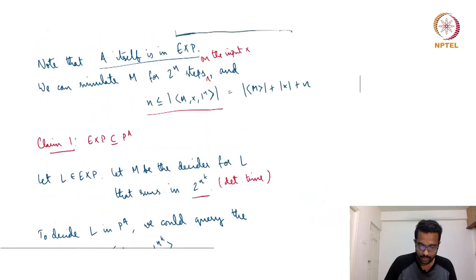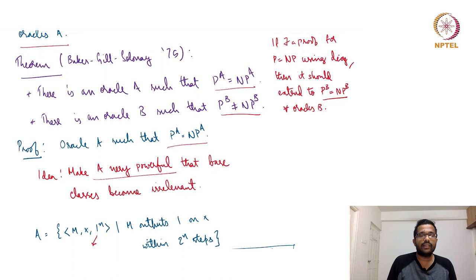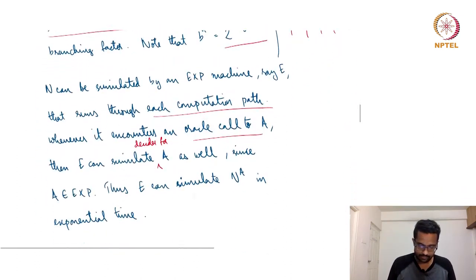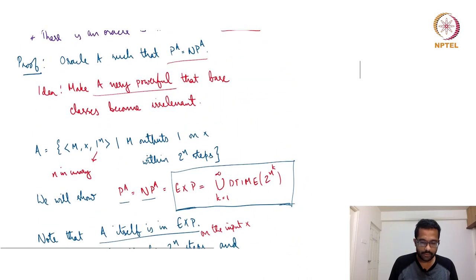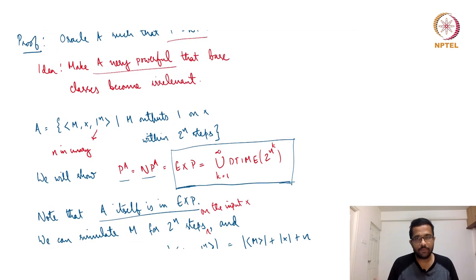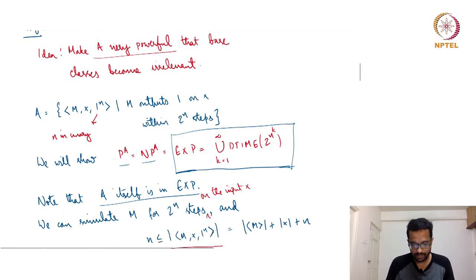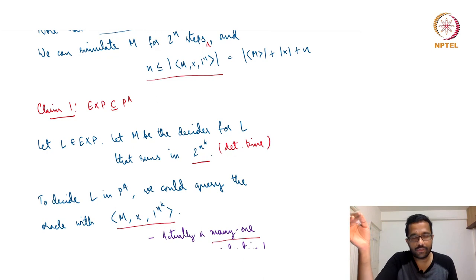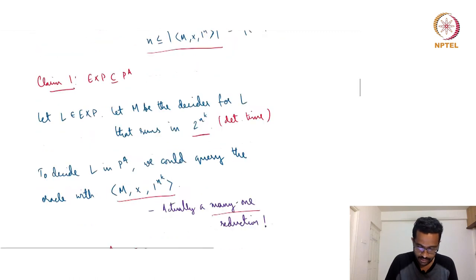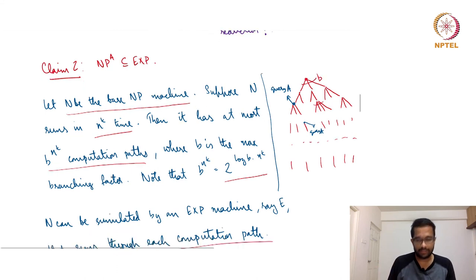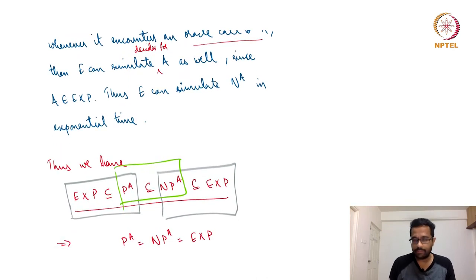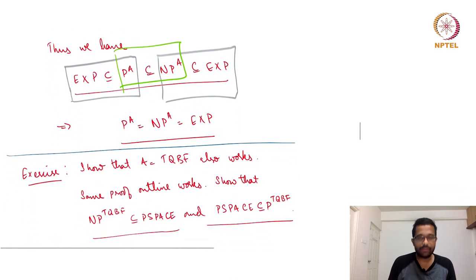To summarize: we need to show P^A equals NP^A. The idea is to make A powerful so that the limitations of the base machine do not come into picture. EXP is contained in P^A because you can query A once and get the answer. NP^A is contained in EXP because you can run through all computation paths in exponential time, and any A oracle query can also be performed in exponential time. Hence NP^A is contained in EXP, and it follows that NP^A equals P^A.